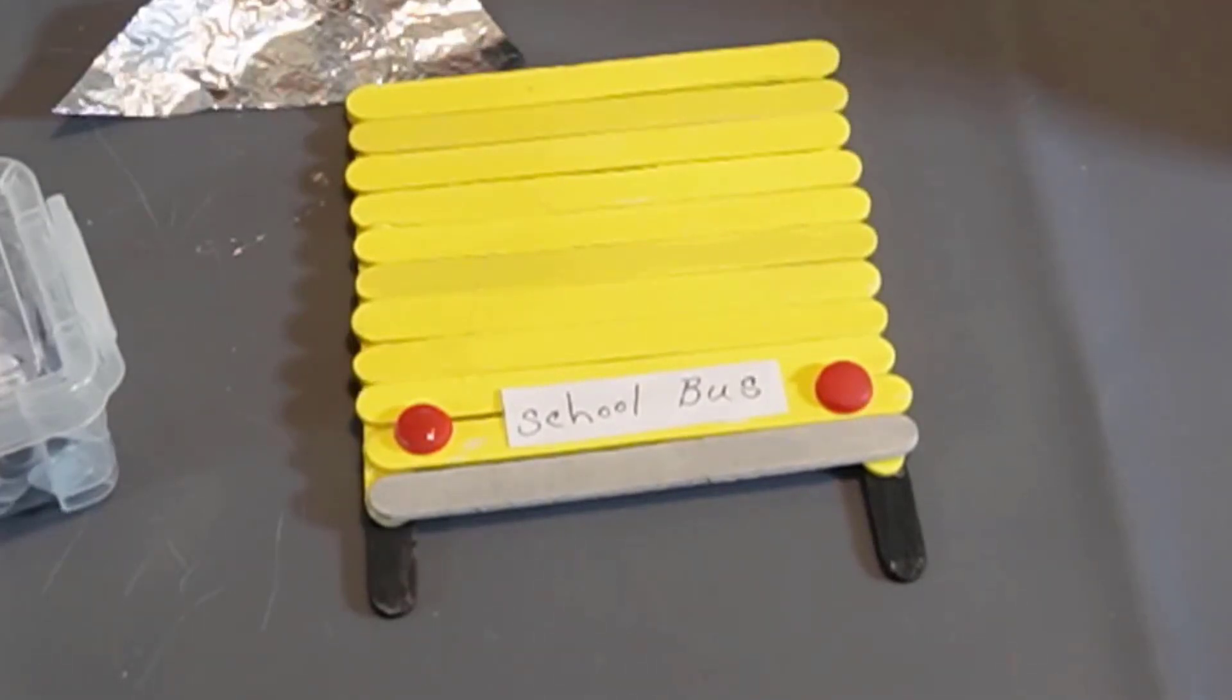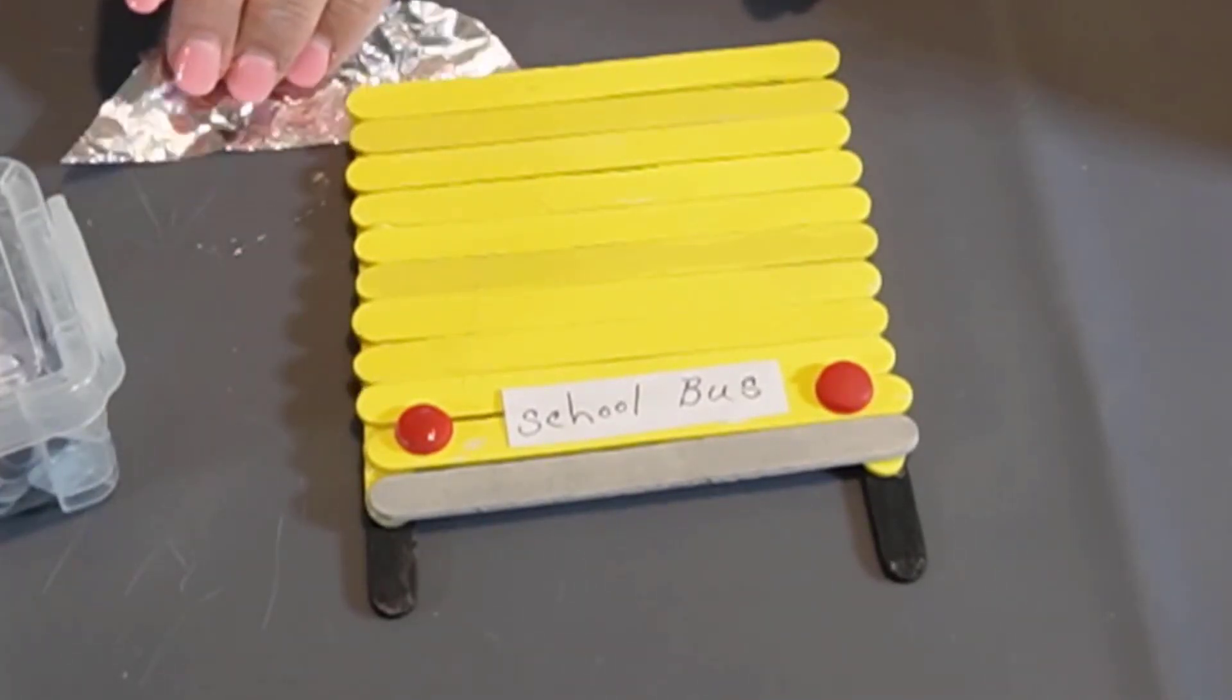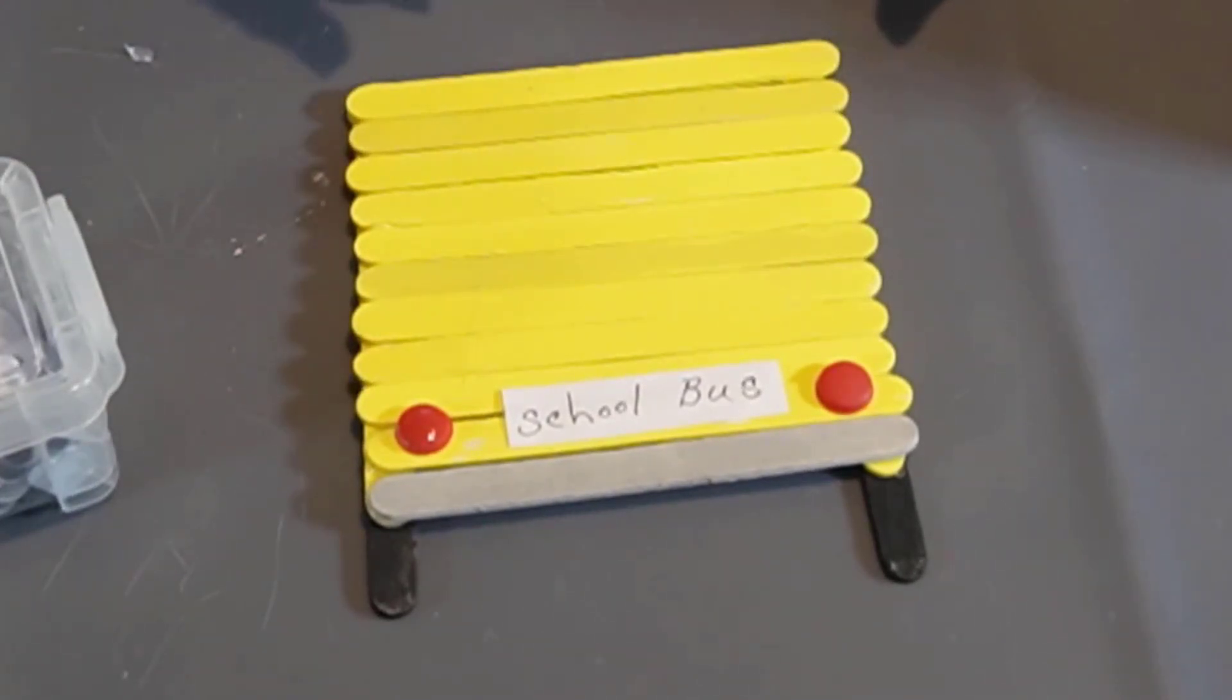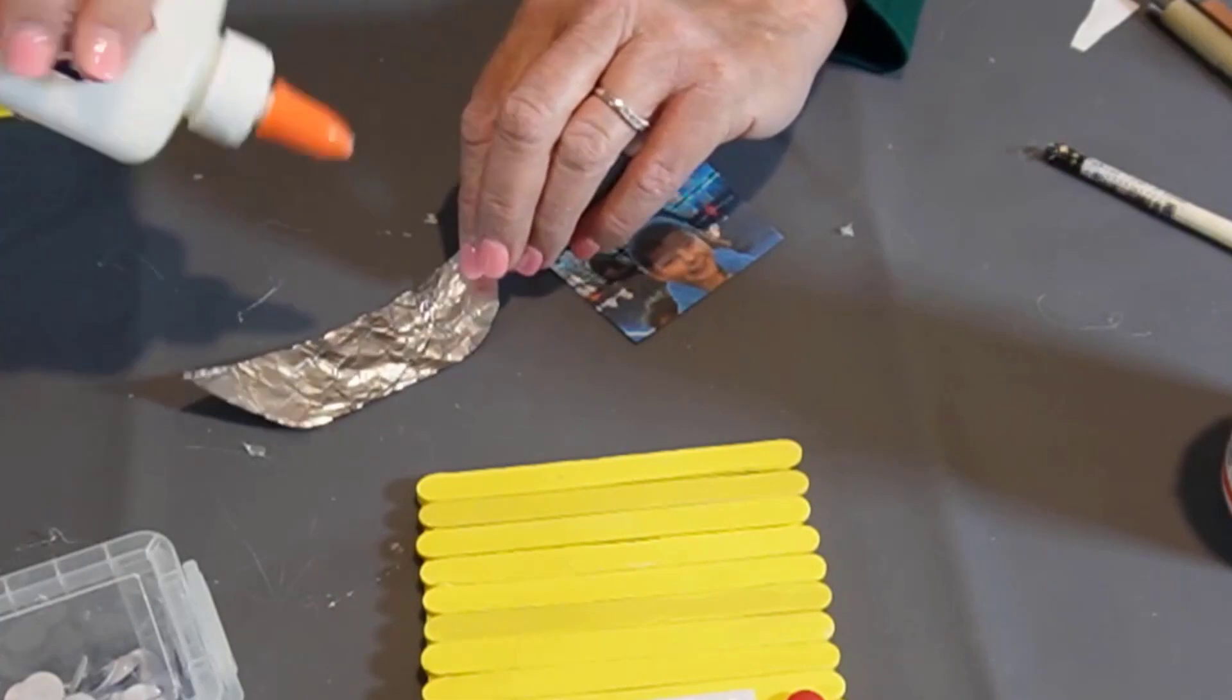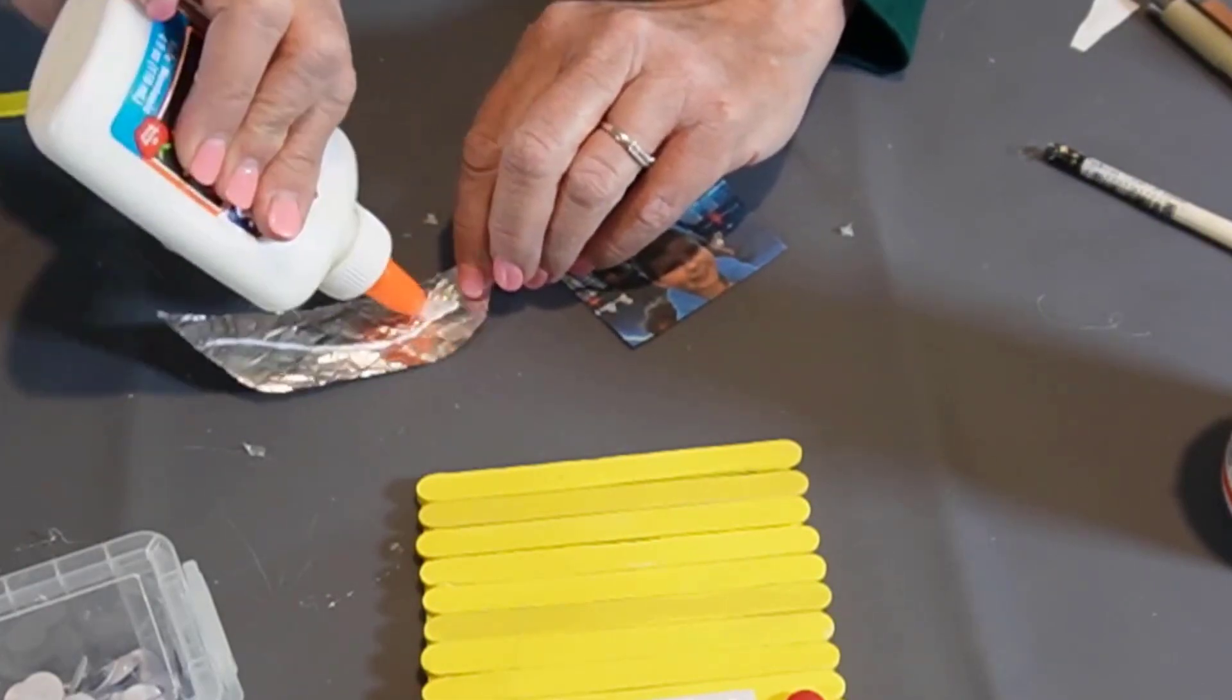Now, this next part is optional. This is something I added. I decided to put a back windshield on the bus and you could probably use crepe paper. I use tinfoil, kind of cut out a rounded back windshield. And I'm going to glue that down with regular glue.